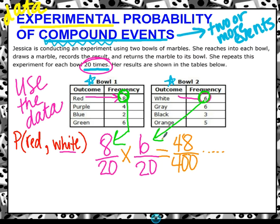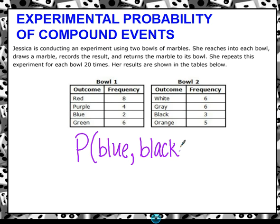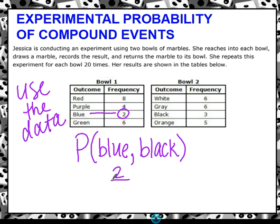Let's try another example. This time let's do the probability of a blue from the first bowl and a black from the second bowl. All we have to do is use their data, so we're not talking about what should happen. We're talking about what actually did happen. They drew a blue two times out of 20 total trials, and they drew a black three times out of 20 total trials. To find compound probability, you multiply your fractions. Top times top would be 6, and bottom times bottom would be 400.